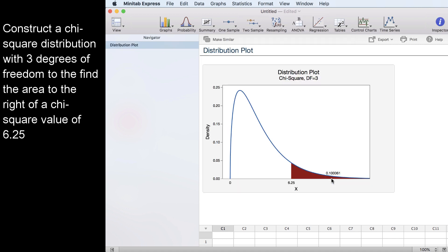On our chi-square distribution with three degrees of freedom, the area to the right of chi-square equals 6.25 is 0.100061.